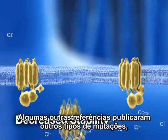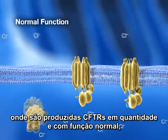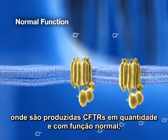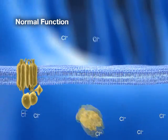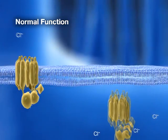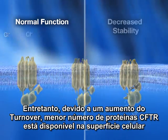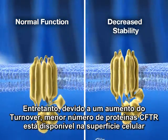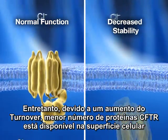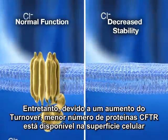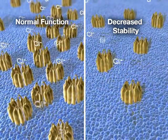Some references cite another group of mutations in which the normal amount of functional CFTR is reduced and reaches the cell surface. However, due to an increased turnover rate, there is less functional CFTR remaining at the cell surface.